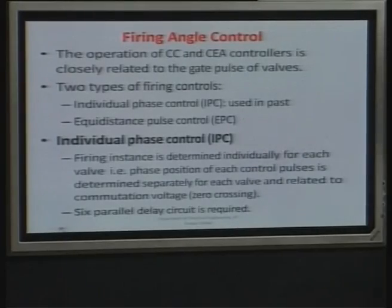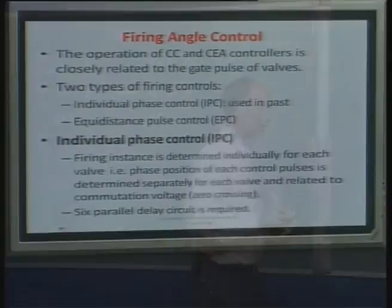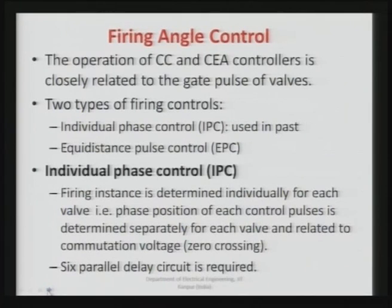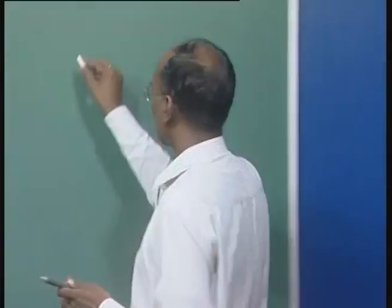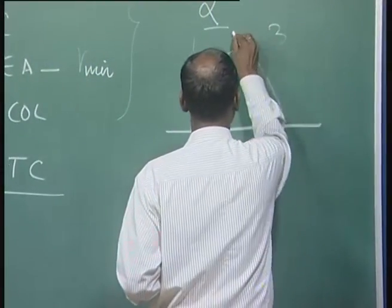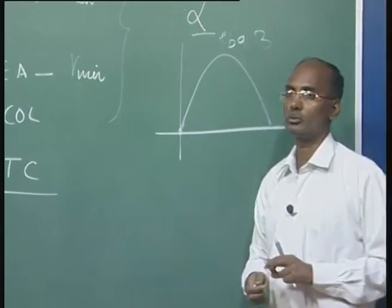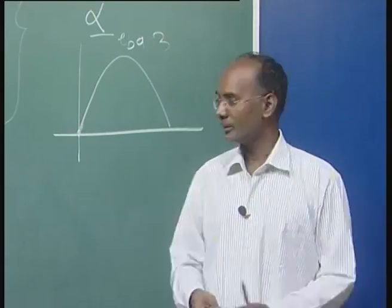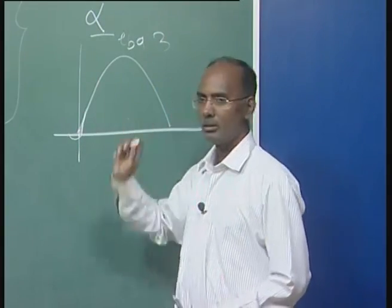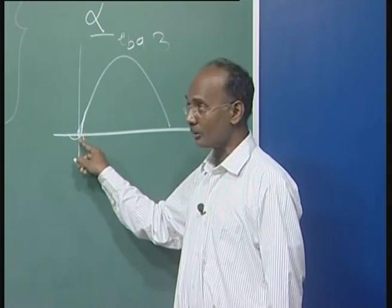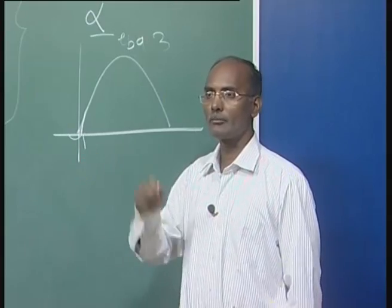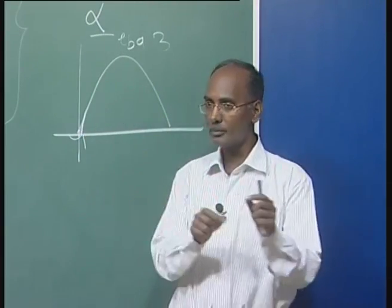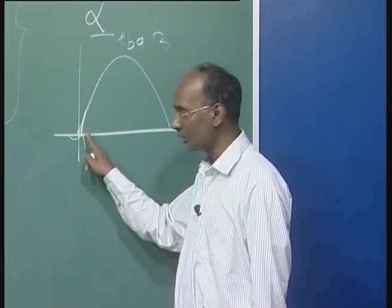In individual phase control, the firing instant is determined individually for each valve — the phase position of each control pulse is determined separately, that is alpha 1 to alpha 6 for each valve — and it is related to the commutation voltage. The commutation voltage, for example of valve 3, is E_BA, and its zero crossing needs to be known. There is also a problem: if using zero crossing, due to some distortion or fault, this zero crossing may shift, causing alpha to change.